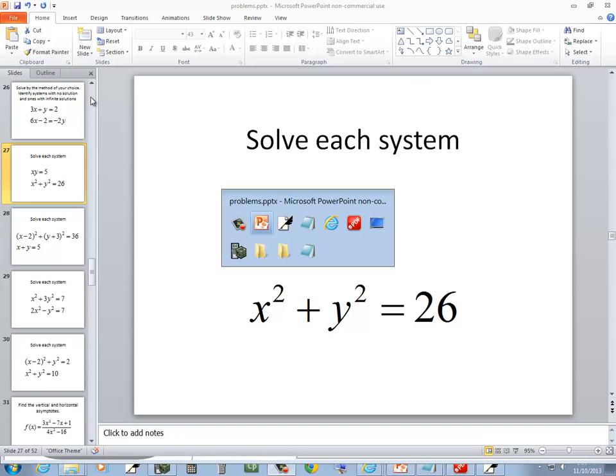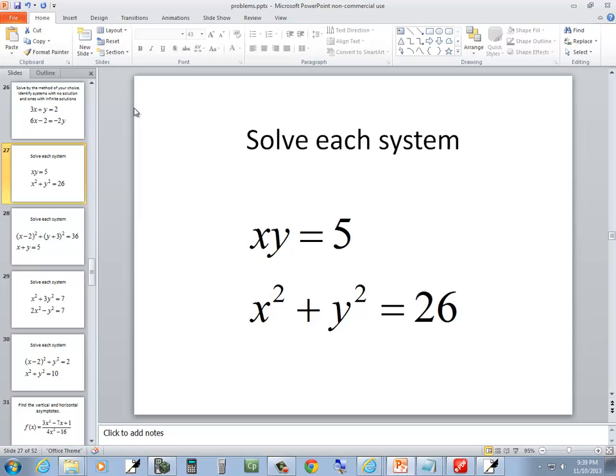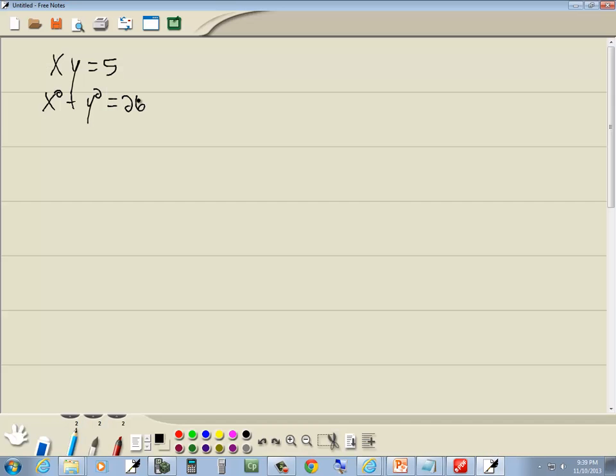Let's take a look at this problem. We got xy equals 5, and we got x squared plus y squared equals 26. Now, we don't want to start with one of the largest powers. You always want to start with the one that's simplest. The xy equals 5 is our simpler one, so we'll start with it.